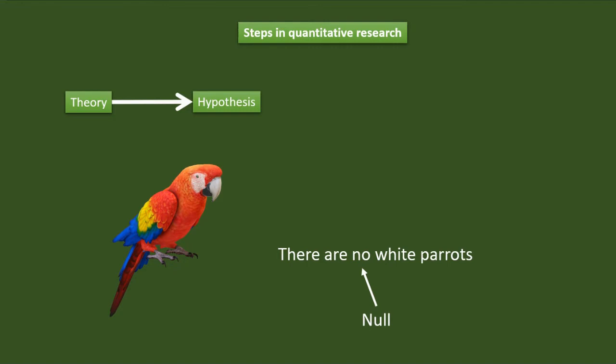So I have a strong hypothesis in my mind. There are no white parrots anywhere in the world. This is a null hypothesis because I am saying about the absence of something. I can say this as my worldview, my paradigm.